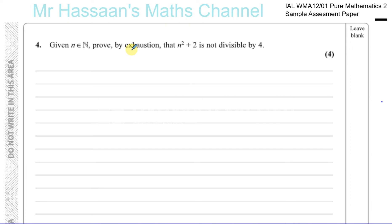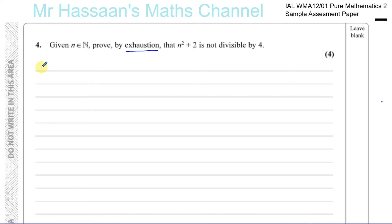What does it mean by proved by exhaustion? Well, it means exhaust all the possible scenarios such that you'll realize there's no way that this will be divisible by 4. There are two ways of doing it. One is a numerical way — try different values of n. I'll show you that way first, though I prefer the algebraic method.